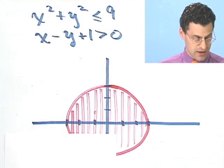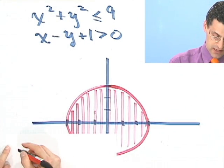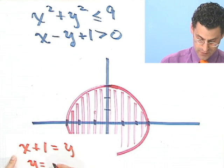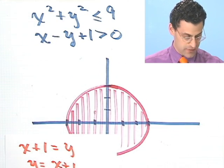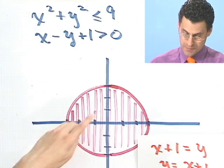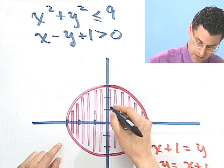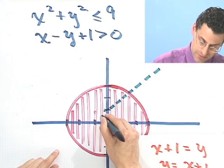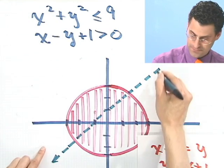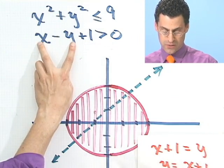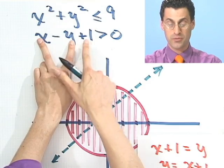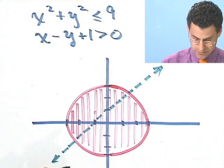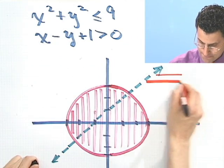The second inequality is just a line. I can rewrite x minus y plus one greater than zero as y equals x plus one, with y-intercept one and slope one. It's a straightforward line passing through that point with slope one. However, there's strict inequality, so I use a dotted line. To determine which side to shade, I plug in the origin: zero minus zero plus one equals one — is one greater than zero? Yes, so I shade the side containing the origin.